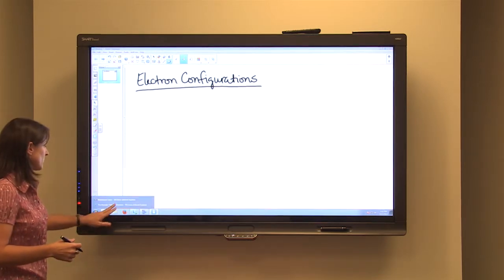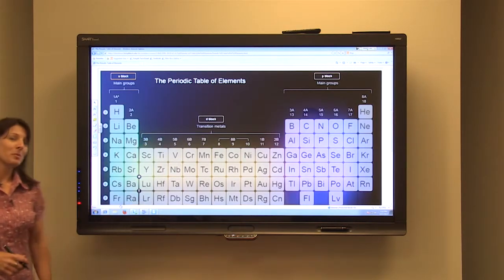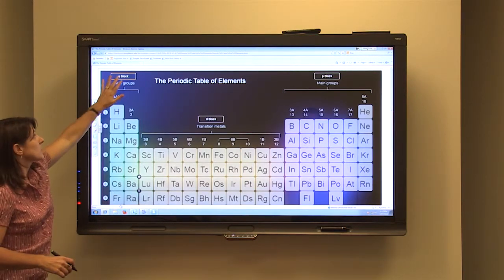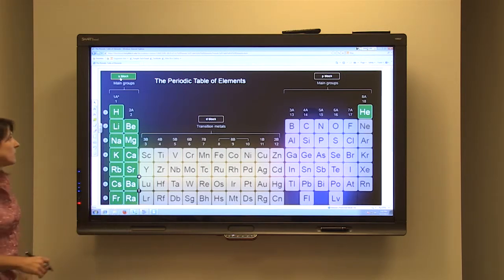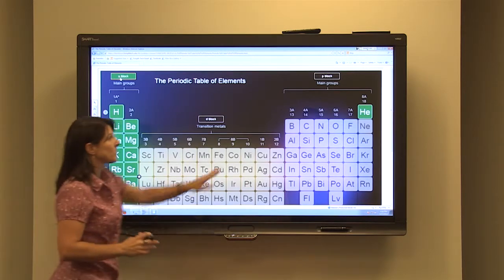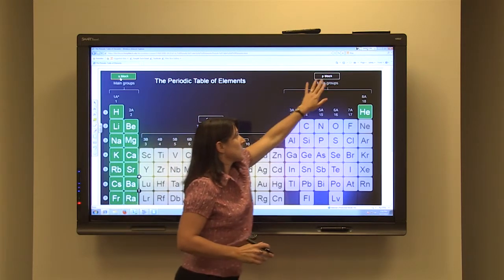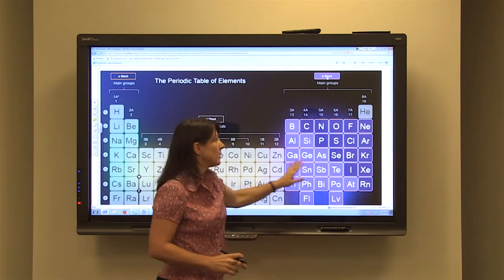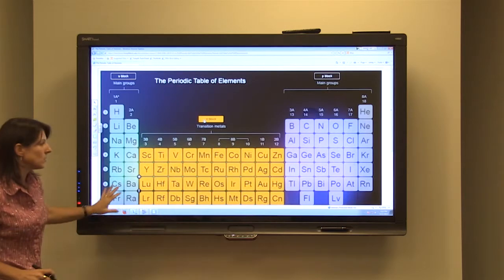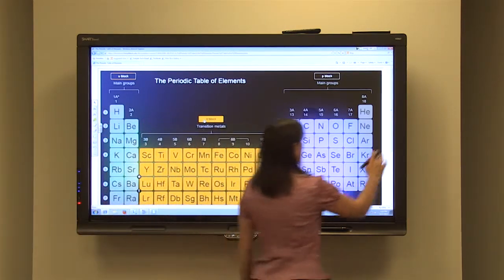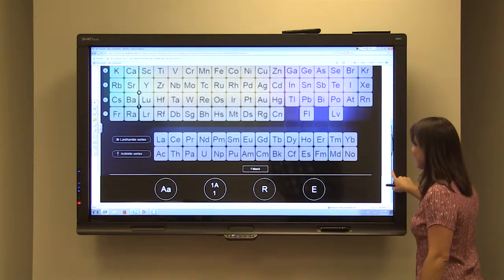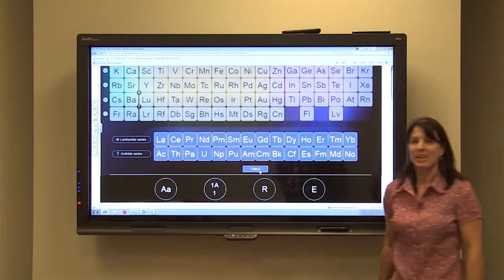If we go back to the periodic table and jog our memory about how the elements are arranged in the different levels and sub-levels, the first two columns of elements represent the elements that end in the S-block or S-sub-level. The six elements on this side of the periodic table end in what we call the P-block or the P-sub-level. Those in the middle end in the D-sub-level and then those at the bottom end up in the F-sub-level.